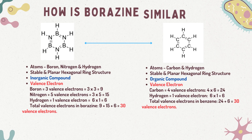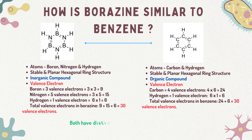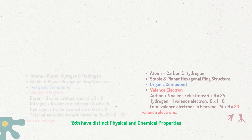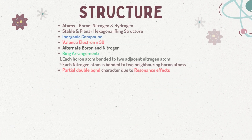Borazine is similar to benzene because both have a stable and planar hexagonal ring structure. Borazine is an inorganic compound while benzene is an organic compound. Another similarity is that both have valence electrons equal to 30.